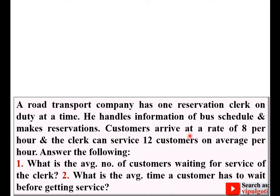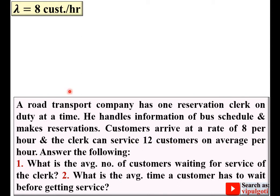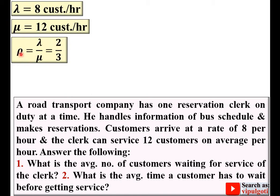Customers arrive at a rate of 8 per hour — that is called the arrival rate lambda. The clerk can service 12 customers on average per hour — that is the service rate mu. Once you have lambda and mu, you find the utilization factor rho, which is equal to lambda upon mu. Putting in the values gives a utilization factor rho of 2/3.